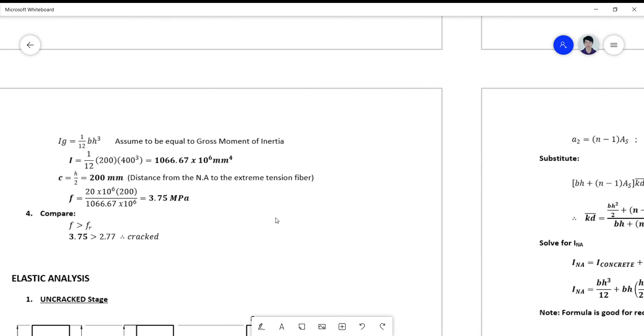So the moment of inertia of the gross section is given by the formula 1/12 of bh cube, which is only applicable to the rectangular gross section. And your i now can be solved using the values of b and h, which we computed it to be this value in millimeter to the fourth.